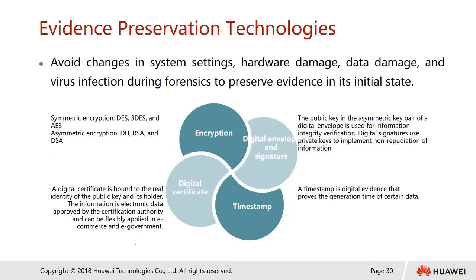Preservation technologies help avoid changes in system settings, hardware damage, data damage, and virus infection during forensics, preserving the evidence in its initial state. We can use encryption, decryption, and digital certificates — technologies studied in the previous chapter — to encrypt the information as evidence. The timestamp is most important, proving when the data was recorded as evidence.